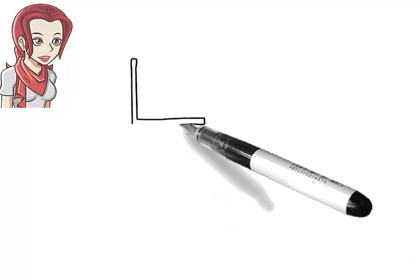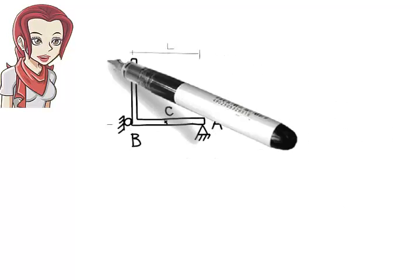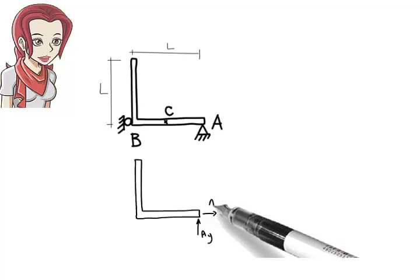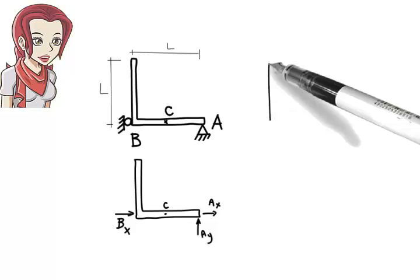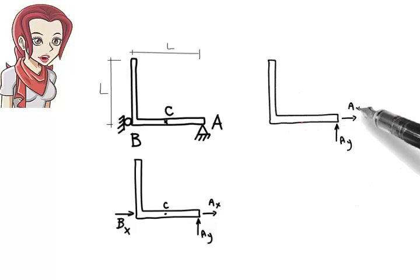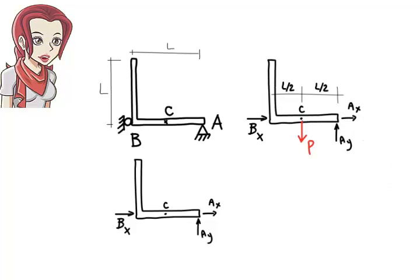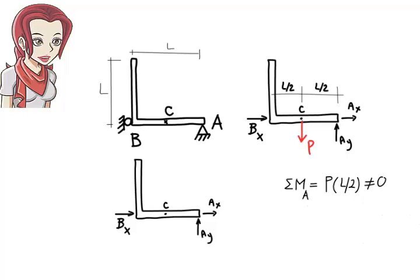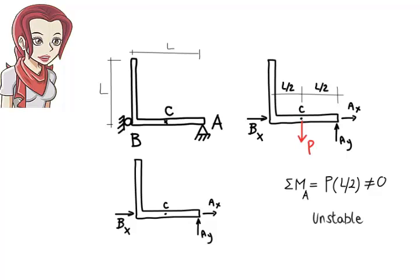Here's another example. The structure is supported by a pin at A and a roller at B. The free-body diagram for the structure shows three reaction forces all passing through point A. If a non-zero vertical force P is placed at the midpoint of member AB, then the sum of the moments about point A becomes P times L over 2. Since neither P nor L is zero, then the sum is not zero. This means the structure is unstable.